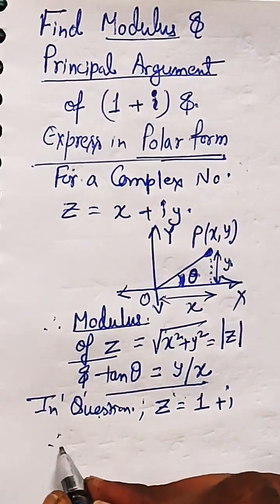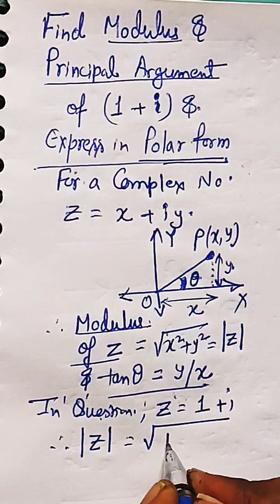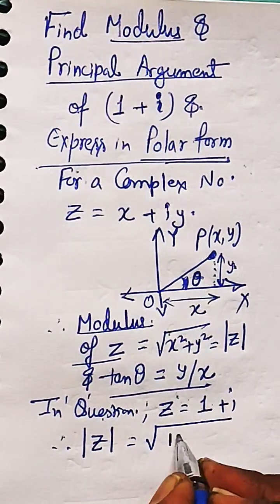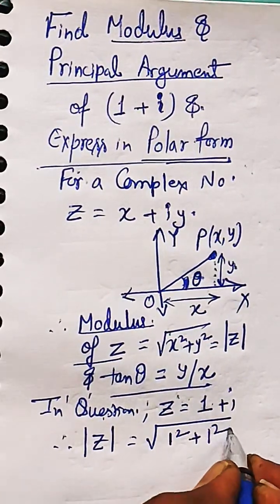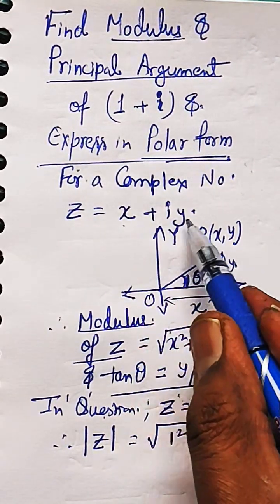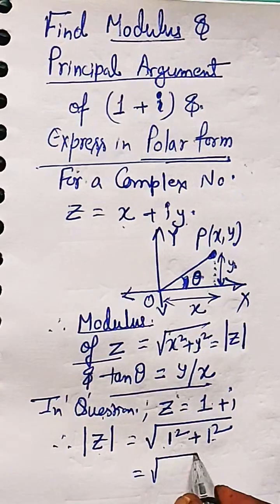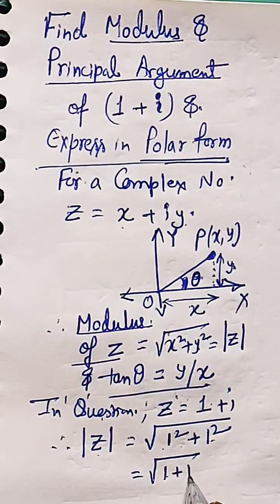Now the modulus of this complex number is modulus of z equal to root over of real part whole square plus imaginary part whole square, which is root over of 1 square plus 1 square. That is x and y what we discussed above, so 1 plus 1 is 2. So root over 2 is the modulus of the given complex number 1 plus i.